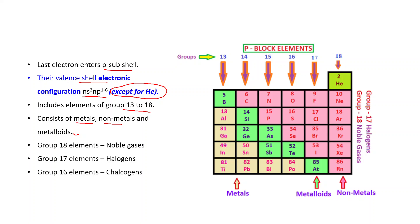In P-block elements, metals, nonmetals, and metalloids are all present. Around the zigzag line on the periodic table, the elements shown in green are metalloids, and the remaining are nonmetals. P-block elements contain solids, liquids, and gases. Group 18 elements are known as noble gases, group 17 as halogens, and group 16 as chalcogens.